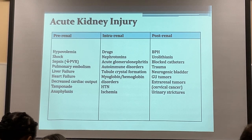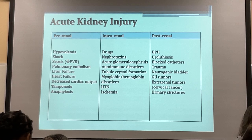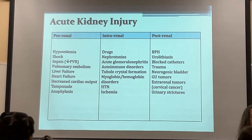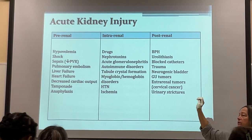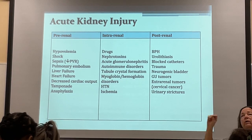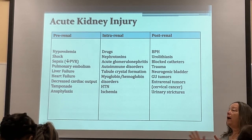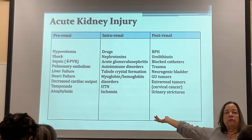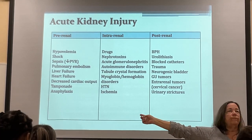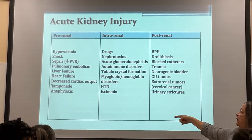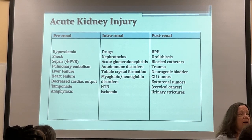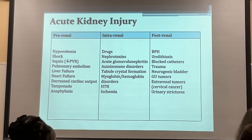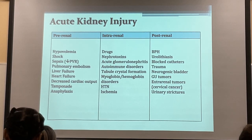Myoglobin involves muscle cell breakdown leading to very large molecules. When perfusing, they can't get through the glomeruli vessels until the glomeruli start failing and the big molecules start passing — that's when you see coca-cola colored urine. Hypertension and diabetes also cause microcirculation problems in the kidneys.